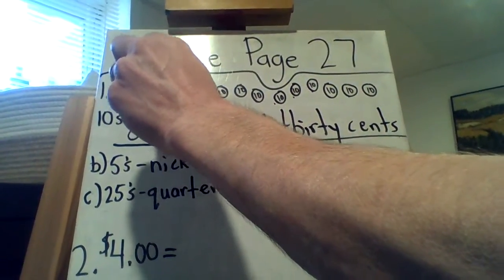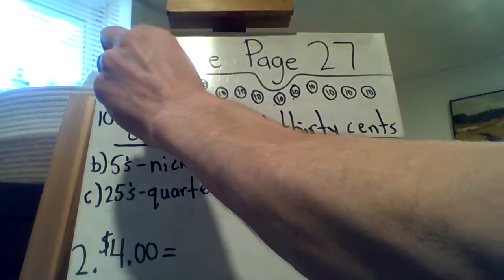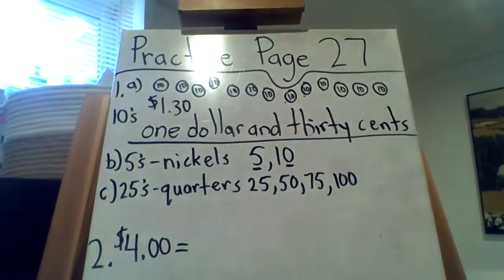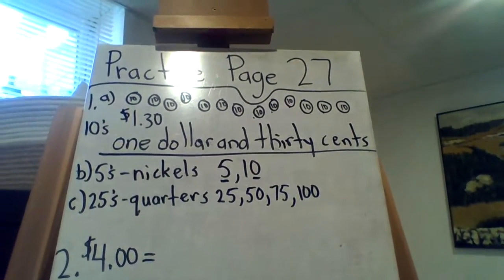I mean, you can write it in the numbers too, just to remind yourself. Look at an EU there. There it is, a dollar and 30 cents.